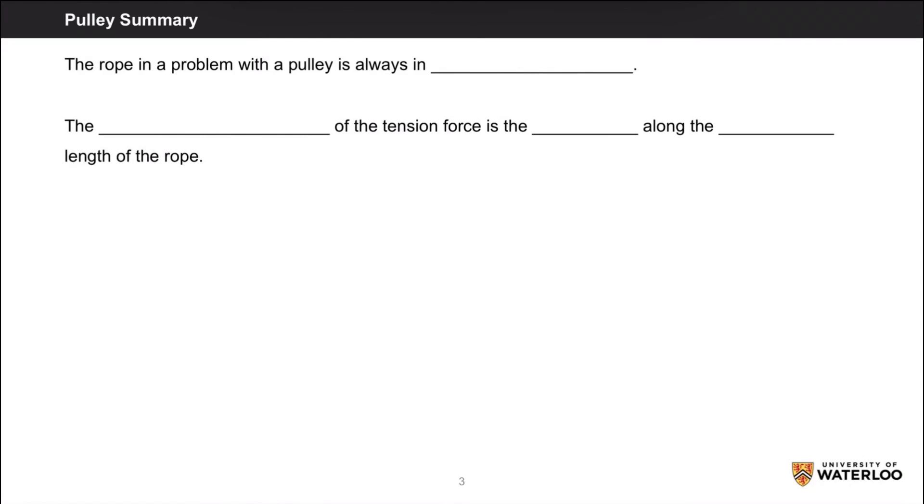The main takeaway from this short lesson is that whenever a pulley is involved in a problem, the rope will be in tension, and regardless of the angle between both ends of the rope, the magnitude of the force will be the same along the entire length.